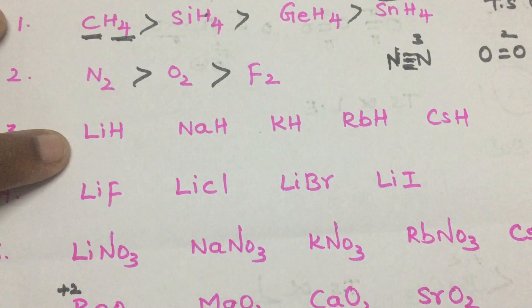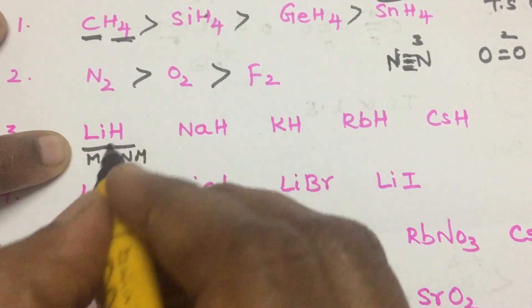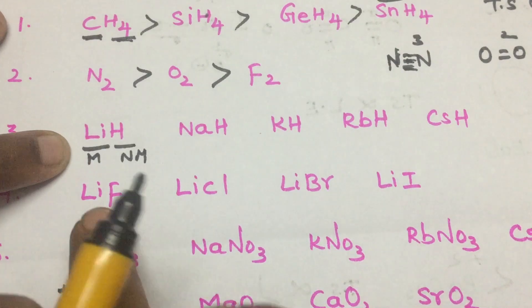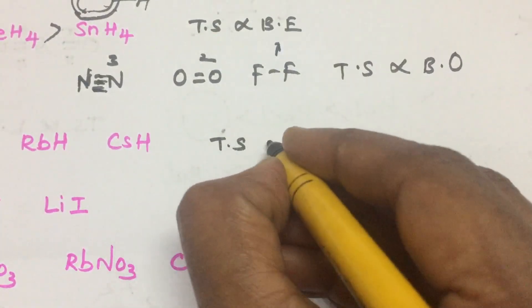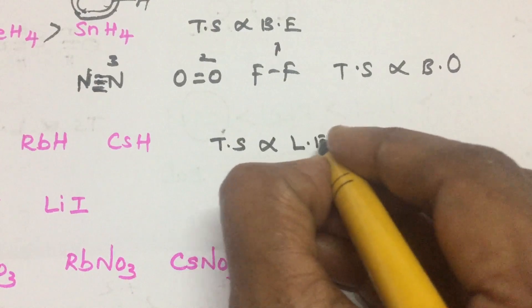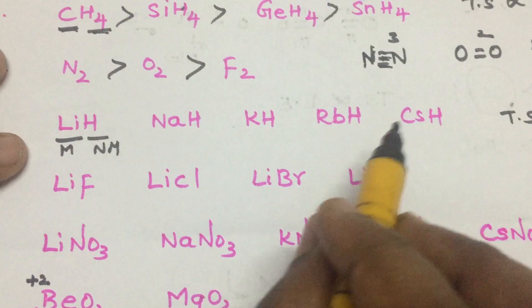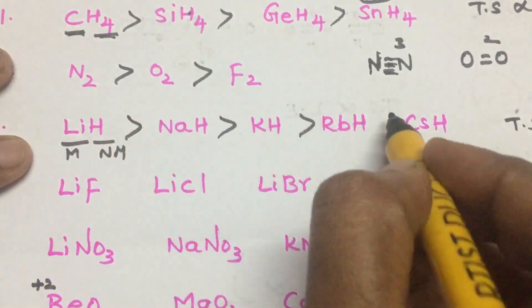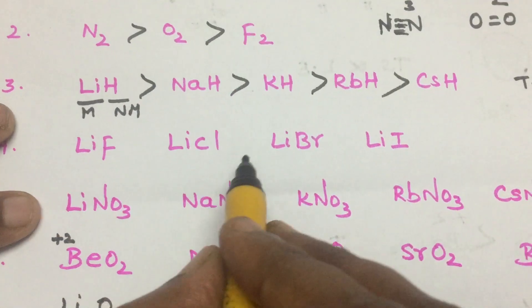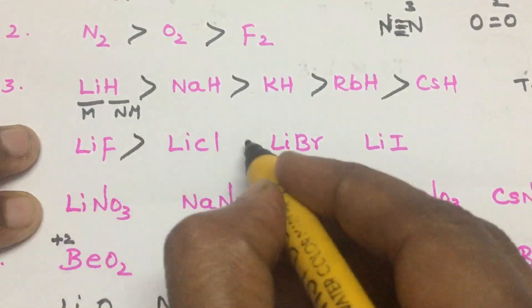Next, lithium hydride. Lithium is a metal and hydrogen is a non-metal, so you have to apply the second rule: thermal stability is directly proportional to lattice energy. For LiF and LiCl, apply the same lattice energy rule — iodine's larger size affects lattice energy.